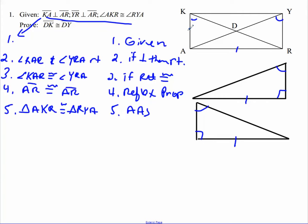I'm going to have these guys right here congruent to each other. So let's go ahead and knock that out. KA is congruent to YR. And CPCTC.